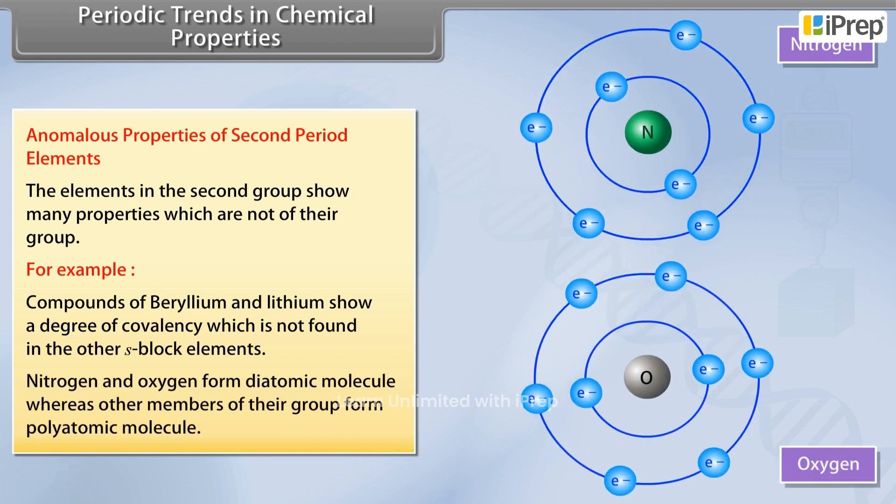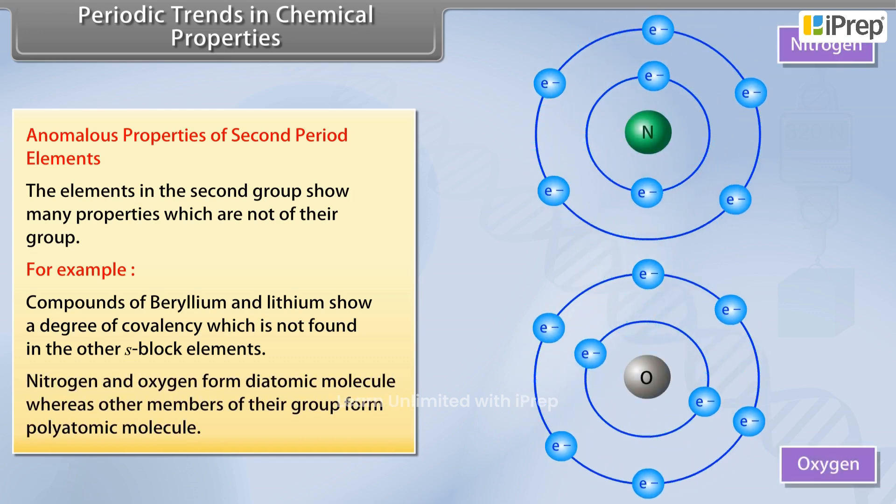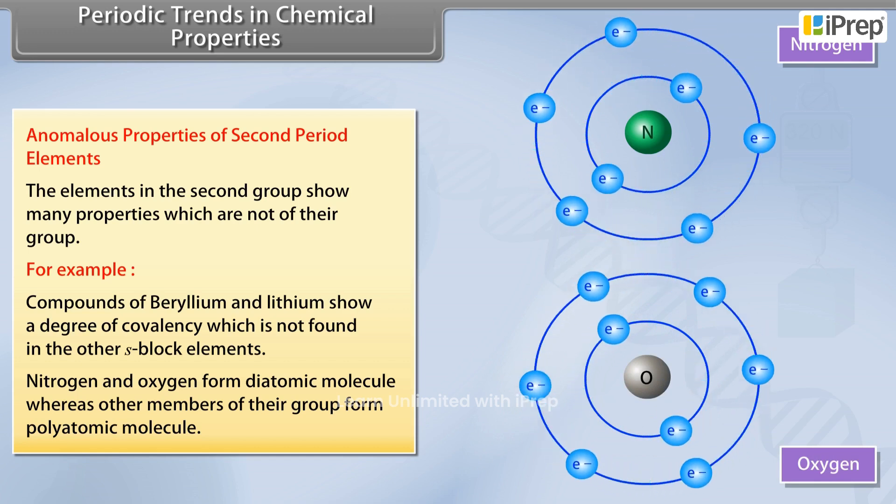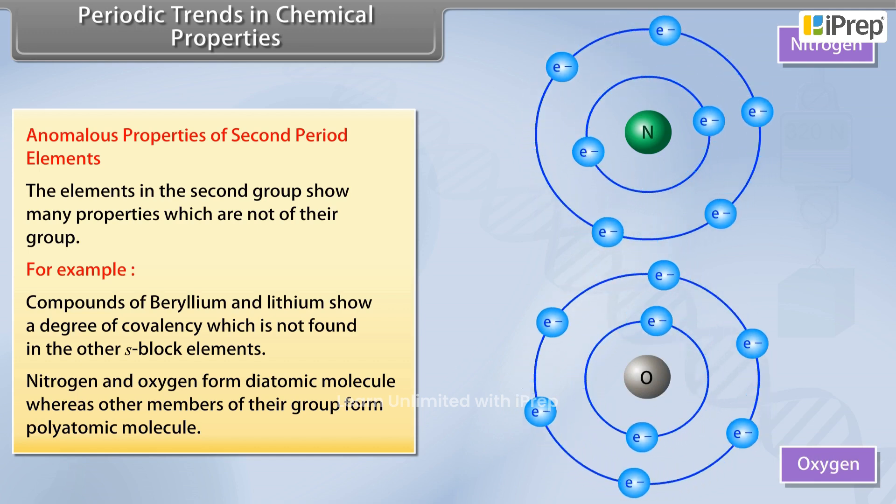Nitrogen and oxygen form diatomic molecules whereas other members of their group form polyatomic molecules.